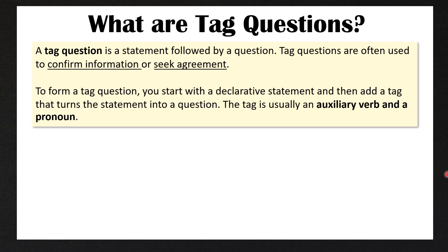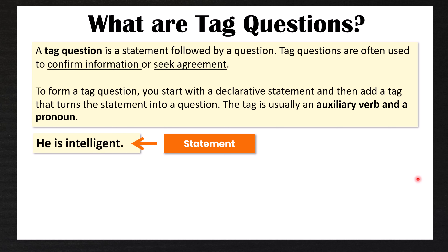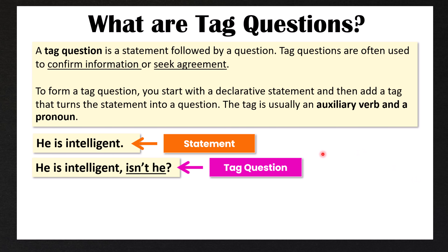The tag is usually an auxiliary verb and a pronoun. For example, 'He is intelligent' — this is a statement. However, if we add 'isn't he' at the end, now we have a tag question: 'He is intelligent, isn't he?' In this case we add 'isn't he' because we want agreement — I think he's intelligent. Do you think he's intelligent? I want you to agree with me.